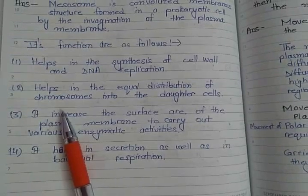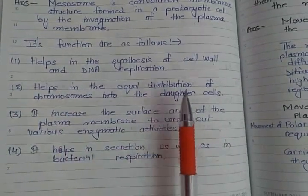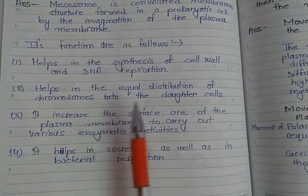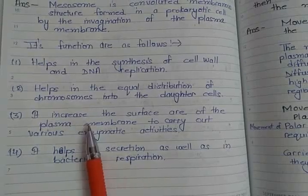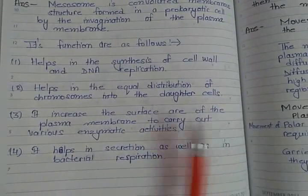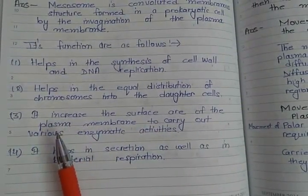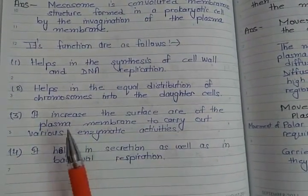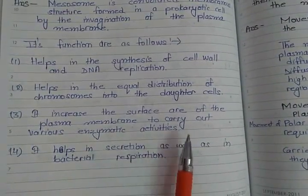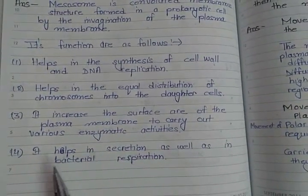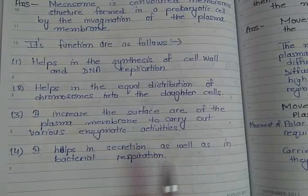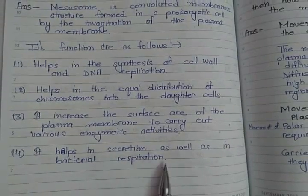Mesosomes also help in equal distribution of chromosomes in daughter cells. They increase the surface area of the plasma membrane to carry out various enzymatic activities, and help in secretion as well as in bacterial respiration.